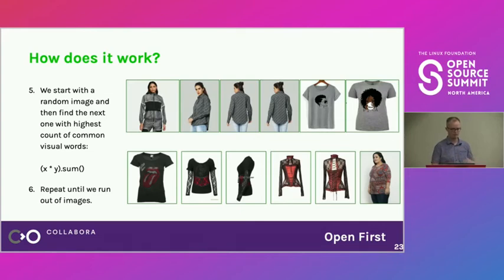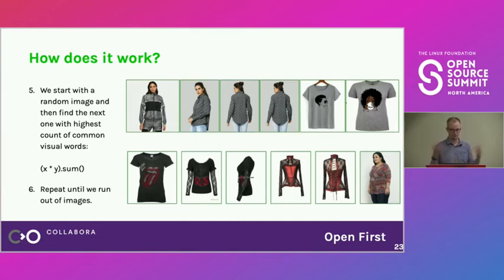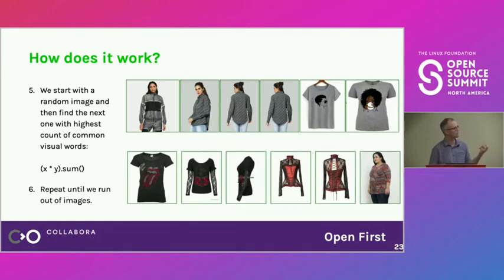Starting from a random image, we find the next one with the highest count of common visual words by element-wise multiplication and sum of the bag-of-words vectors. The results on the t-shirt dataset are really good — similar images are grouped together, and you can see the visual similarity between examples.